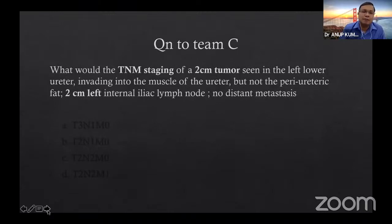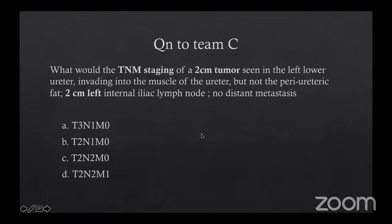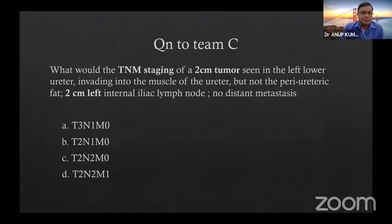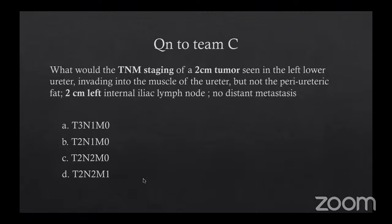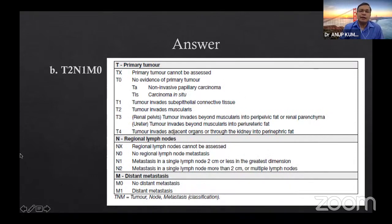Question 7 to Team C: What is the TNM staging of a 2 cm tumor in the left lower ureter, invading muscle but without periureteric fat invasion, with a 2 cm left internal iliac lymph node, and no distant metastasis? Options: T3N1, T2N1, T2N2, T2N2M1. Dr. Soumya answers B — T2N1M0 — which is correct. This staging is not commonly discussed, but is very important and should always be remembered to guide patient management.